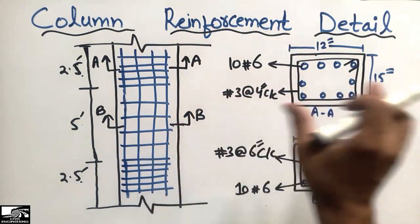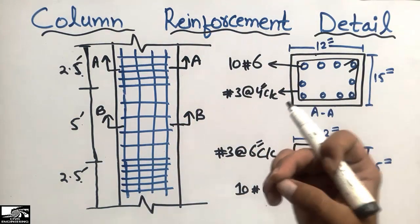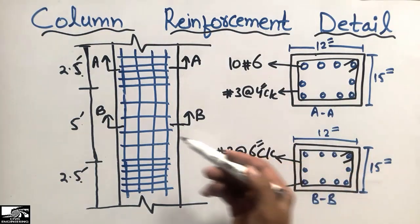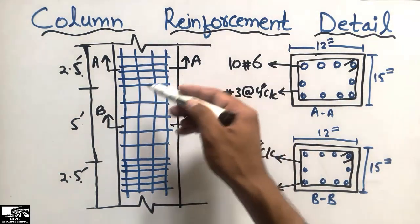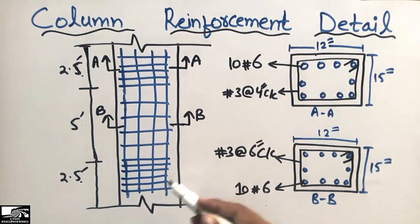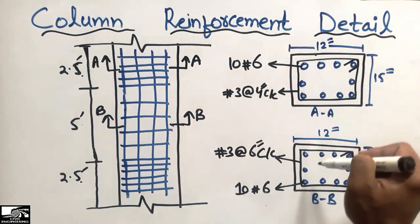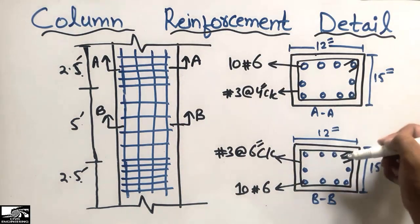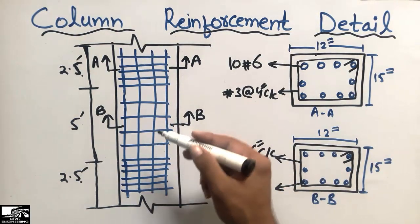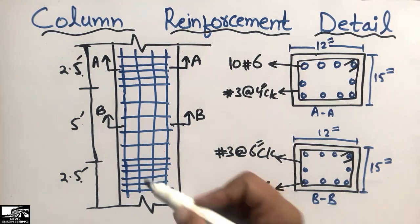They have provided two sections in this column. There is a reason to provide two sections — one section is enough to read the column details, but here we have different column cross-sections due to some reason. I will explain why we have two different sections of the single column.